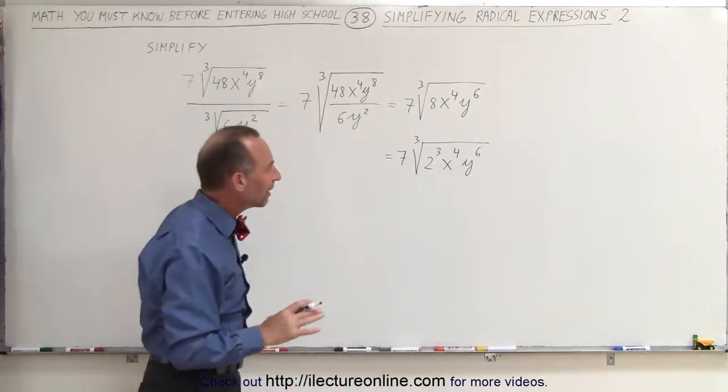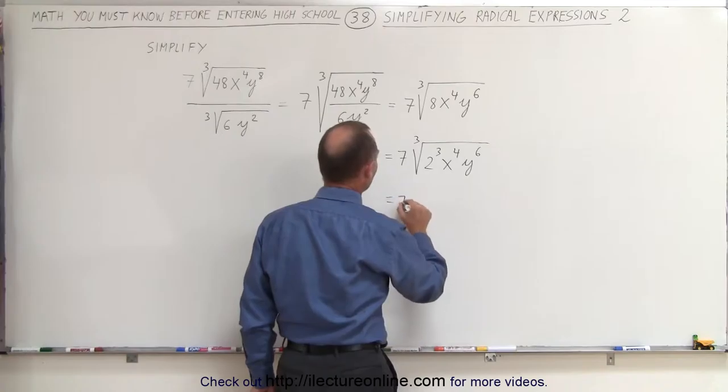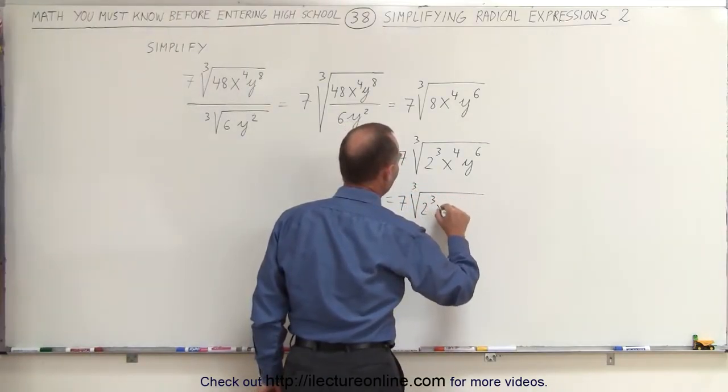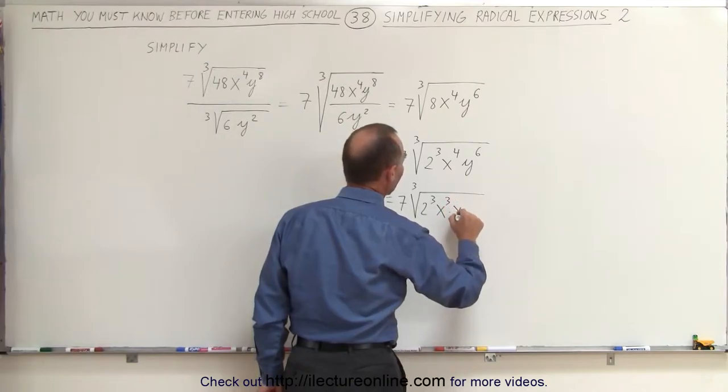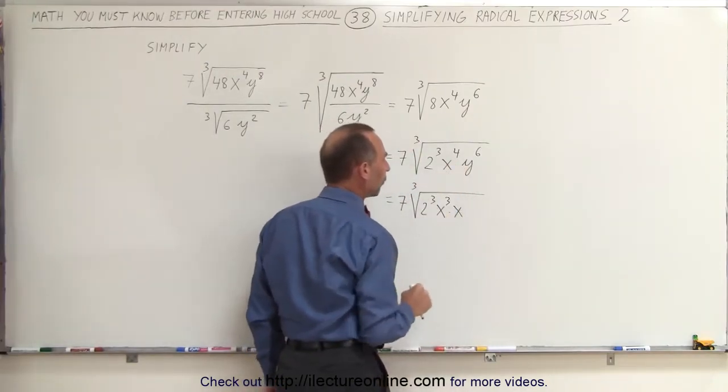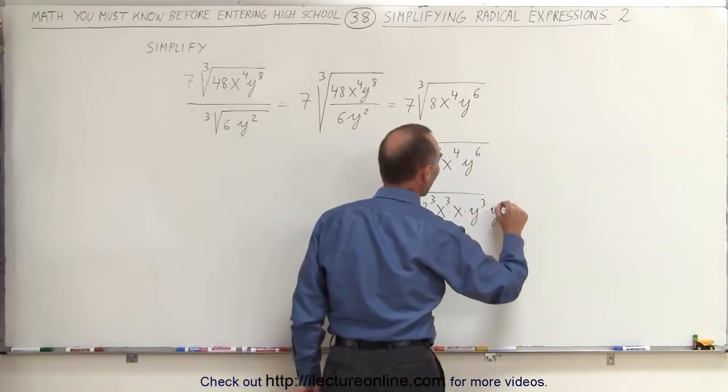And then, to simplify that even further, what we could do is write as follows: This is equal to 7 times the cube root of 2³, x³ times x¹, and y³ times y³.